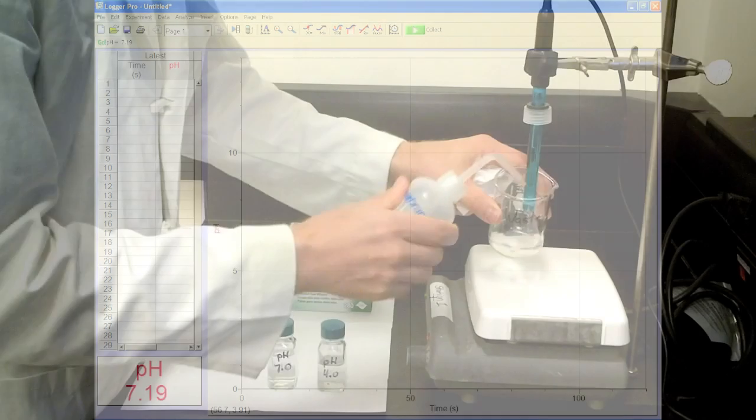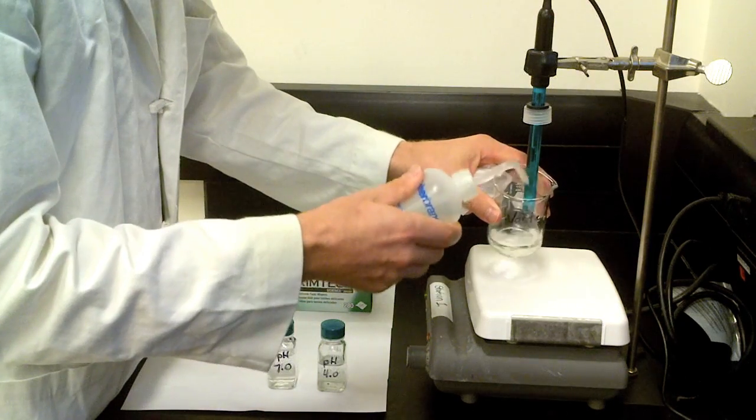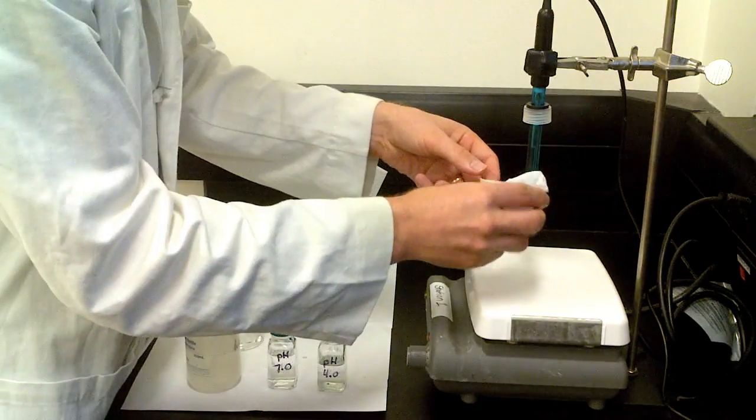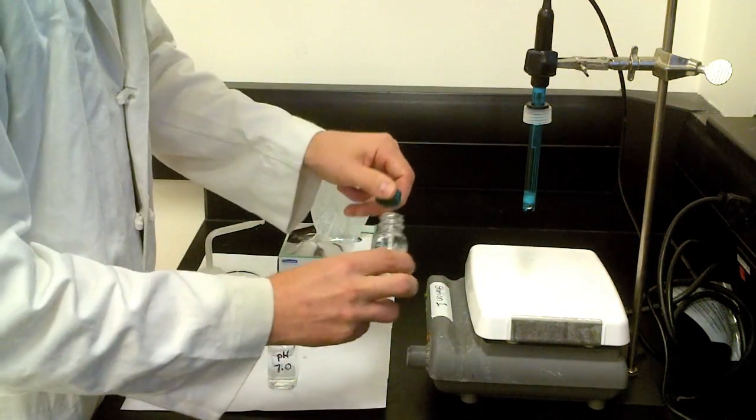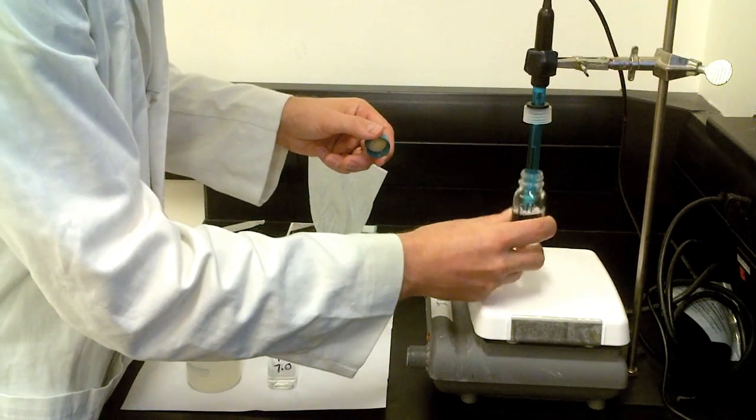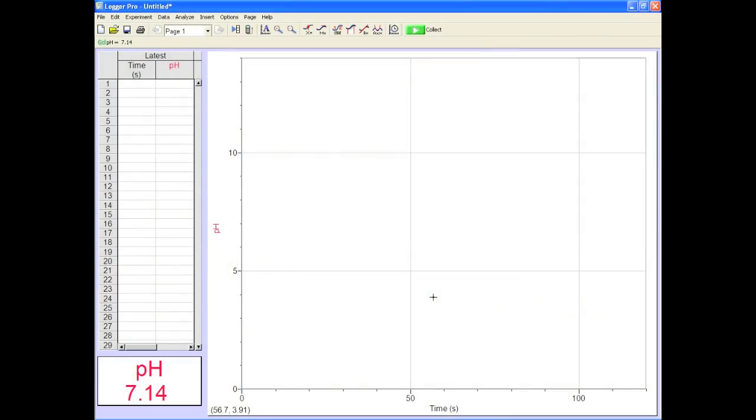Now you'll need to check the calibration to make sure you didn't completely fail. Rinse the probe and take a measurement of one of the standards. Keep an eye on the pH as it settles. It should cozy up to the expected value. Brilliant.